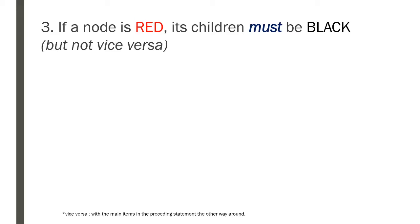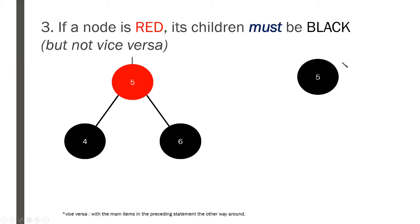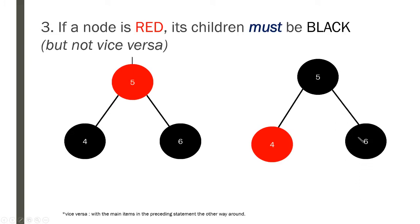The third rule: if a node is red, its children must be black. So if we have a red node, its children are always black — never red. A red node can only have black children. But note that this does not work vice versa. If a node is black, its children don't have to be red — a black node can have both red and black children, even black-black children.